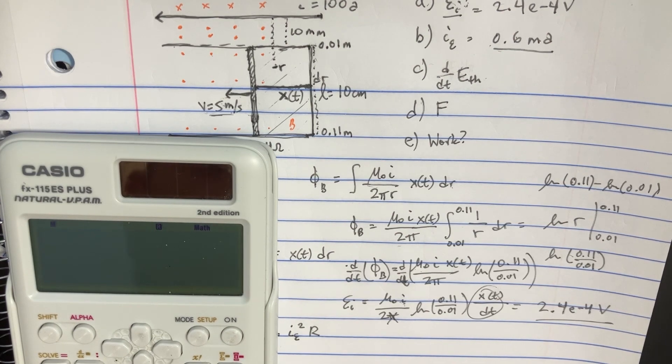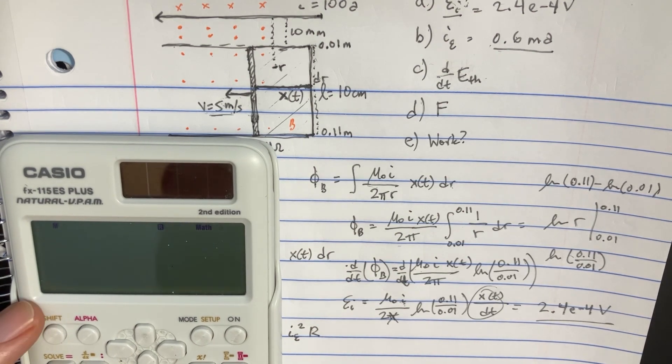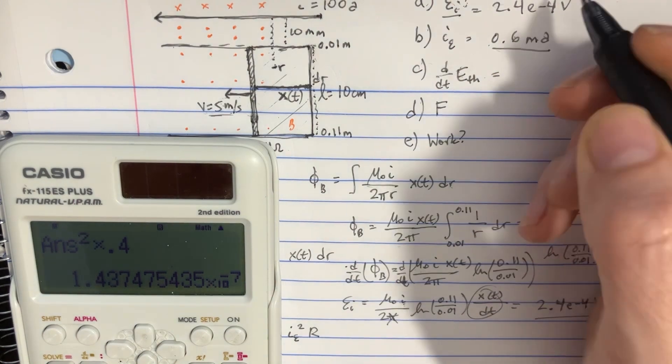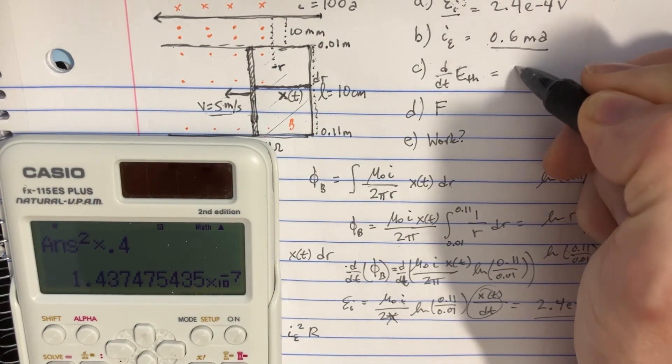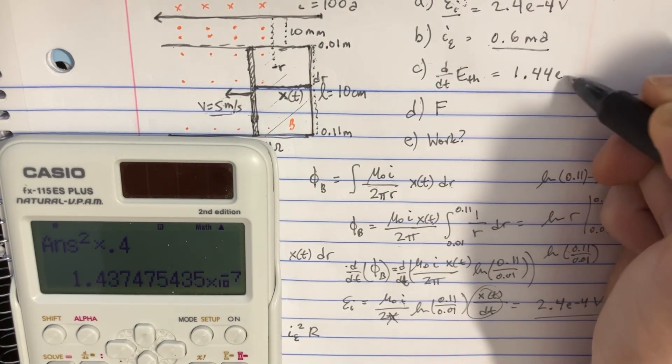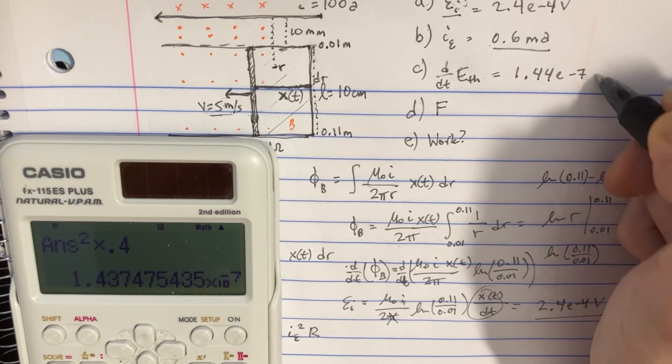That's just going to be, what was our answer? Let's square that. And then we'll multiply that by R. So we got the power that was dissipated being 1.44 e to the negative 7 watts.